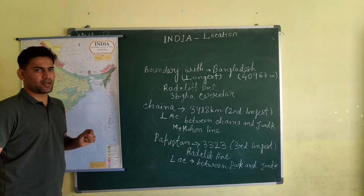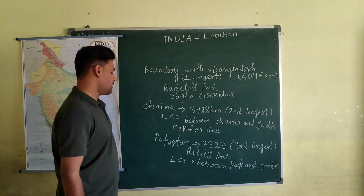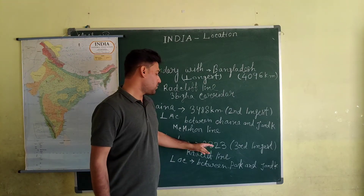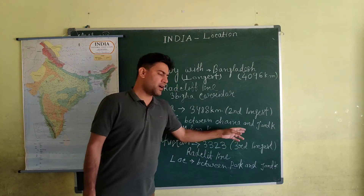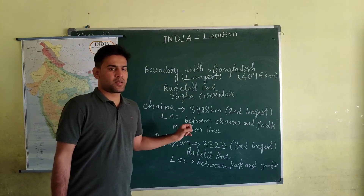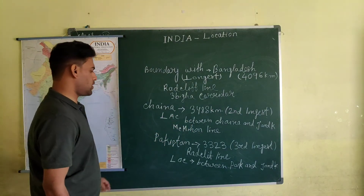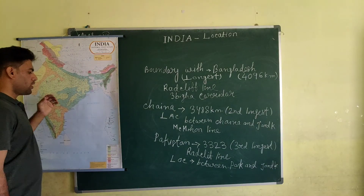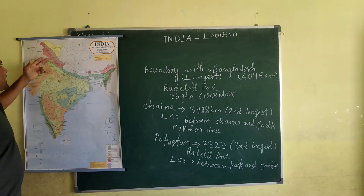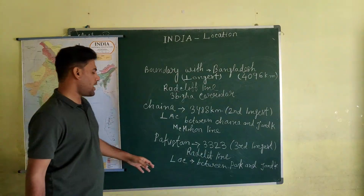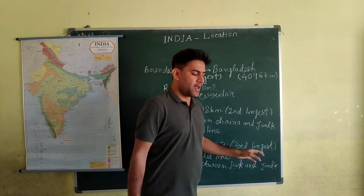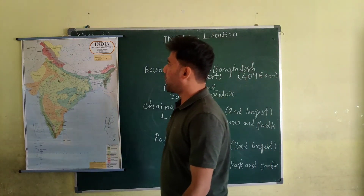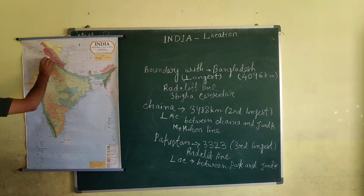The land frontier shared with Pakistan is about 3,323 km and is the third longest boundary line shared by India with any other country. This line is also known as the Radcliffe Line, and there is the Line of Control between Pakistan and Jammu & Kashmir, as well as a border line between Punjab and Pakistan.